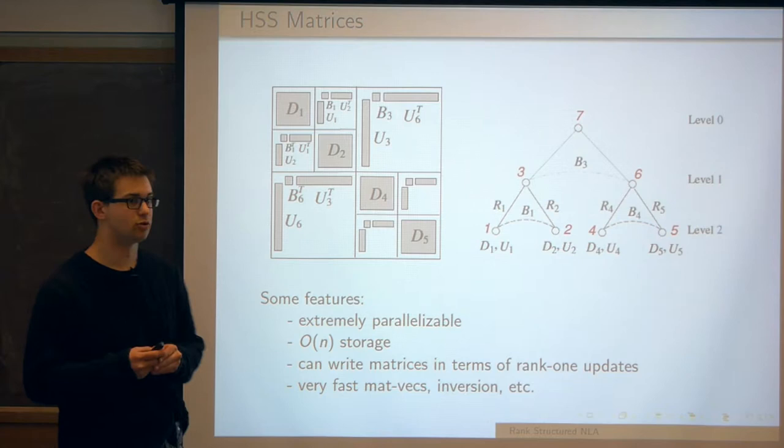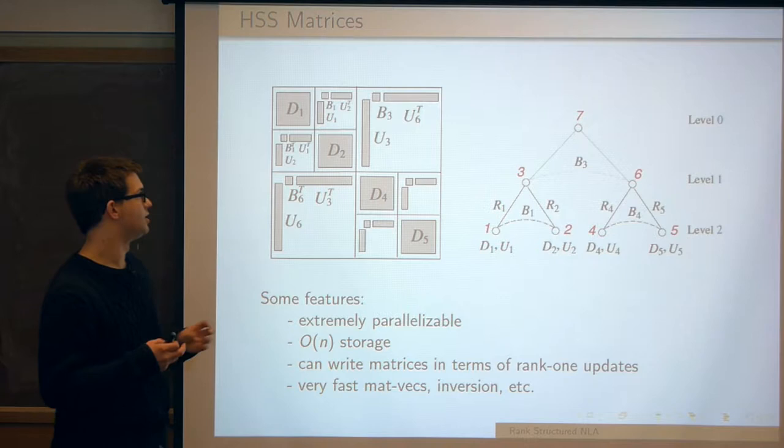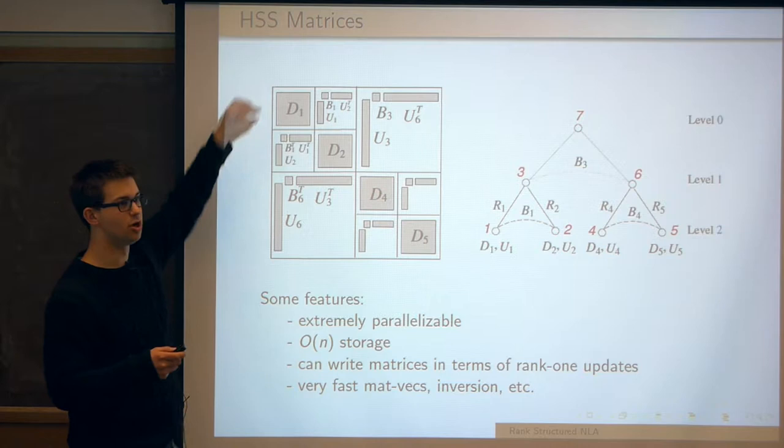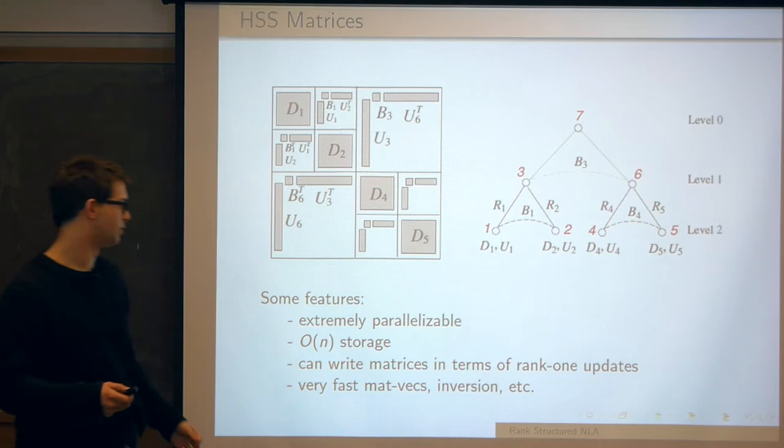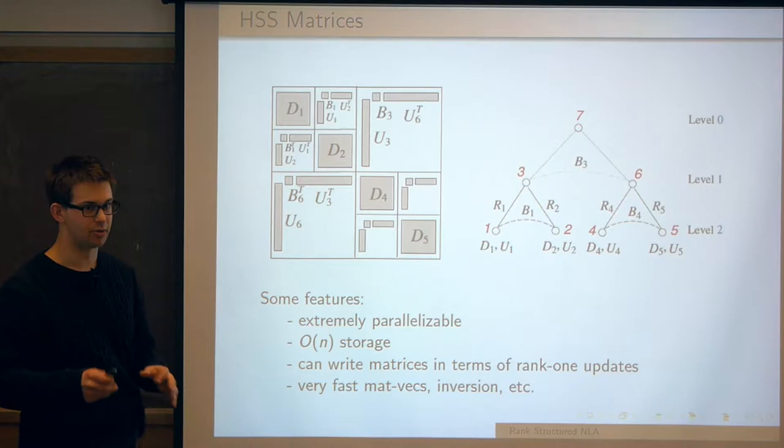We have a full arsenal: depending on the kind of problem you're looking at, you might want a bisection scheme, a divide and conquer scheme, an alteration of Feast — Eric Polizzi's algorithm which uses contour integration — or an SVD. So to review HSS matrices, the main idea is that we have these off-diagonal blocks and these off-diagonal HSS block rows all have a low rank. These features come up a lot in the eigensolvers.